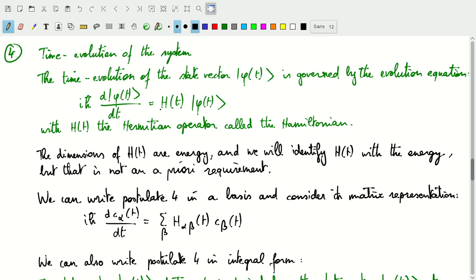So in this case this H operator is a Hermitian operator that we call the Hamiltonian. And that defines the time evolution of the system.